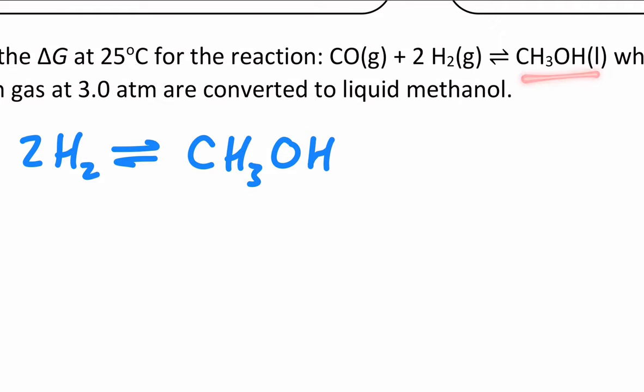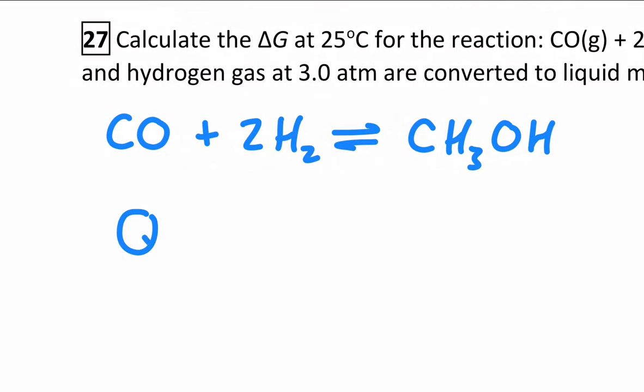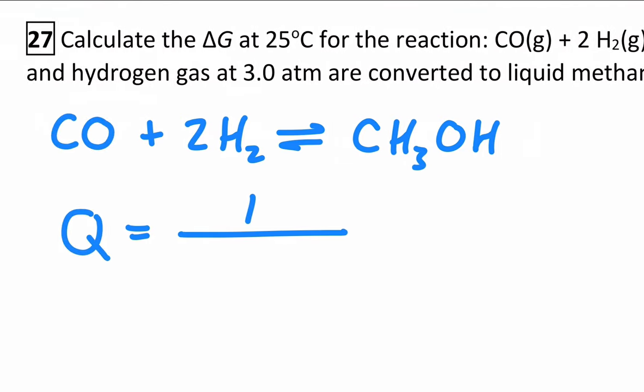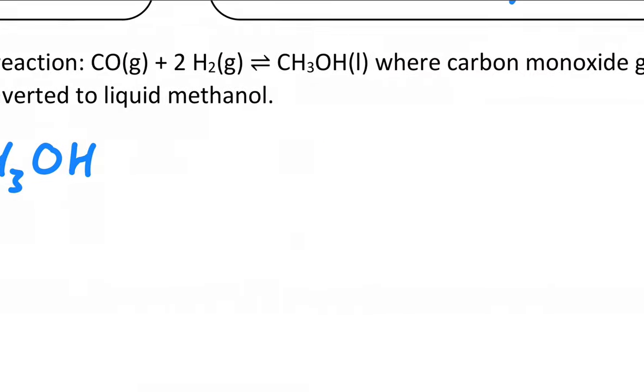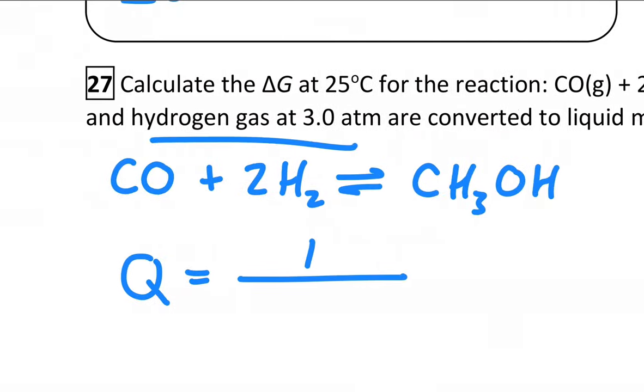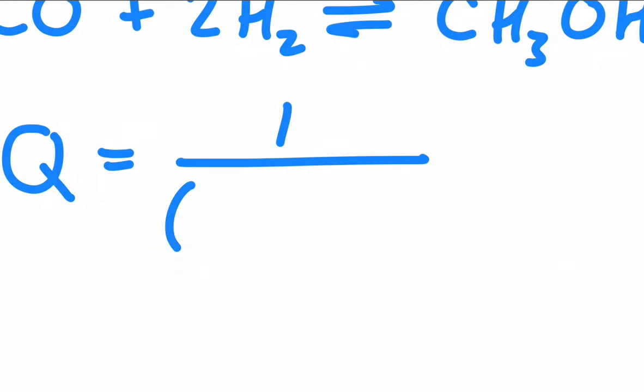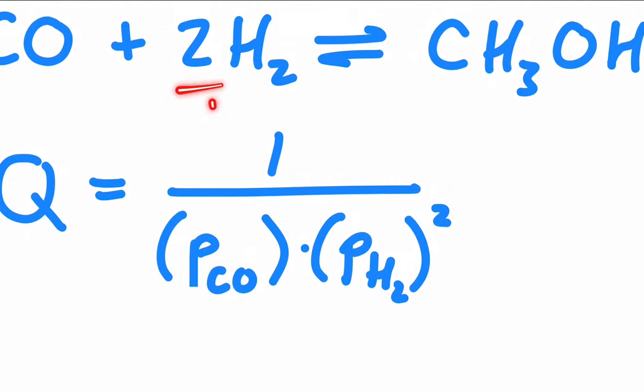And remember, the activity of a pure liquid or solid is one. So if we were to write the reaction quotient, which is the same as the expression for the equilibrium, it's just the gases on the reactant side, which go in the denominator. So Q is equal to products over reactants. The product is a liquid, so its activity is one. And in the denominator, we're going to use the partial pressures. We have three atmospheres of hydrogen, and we have five atmospheres of carbon monoxide.